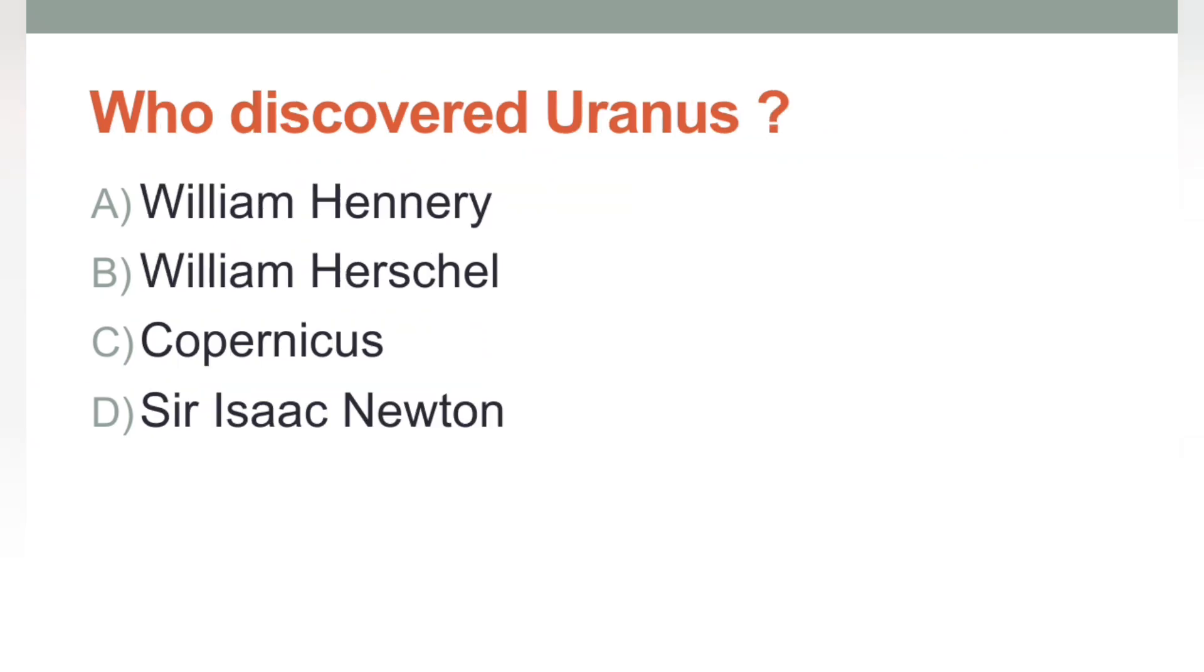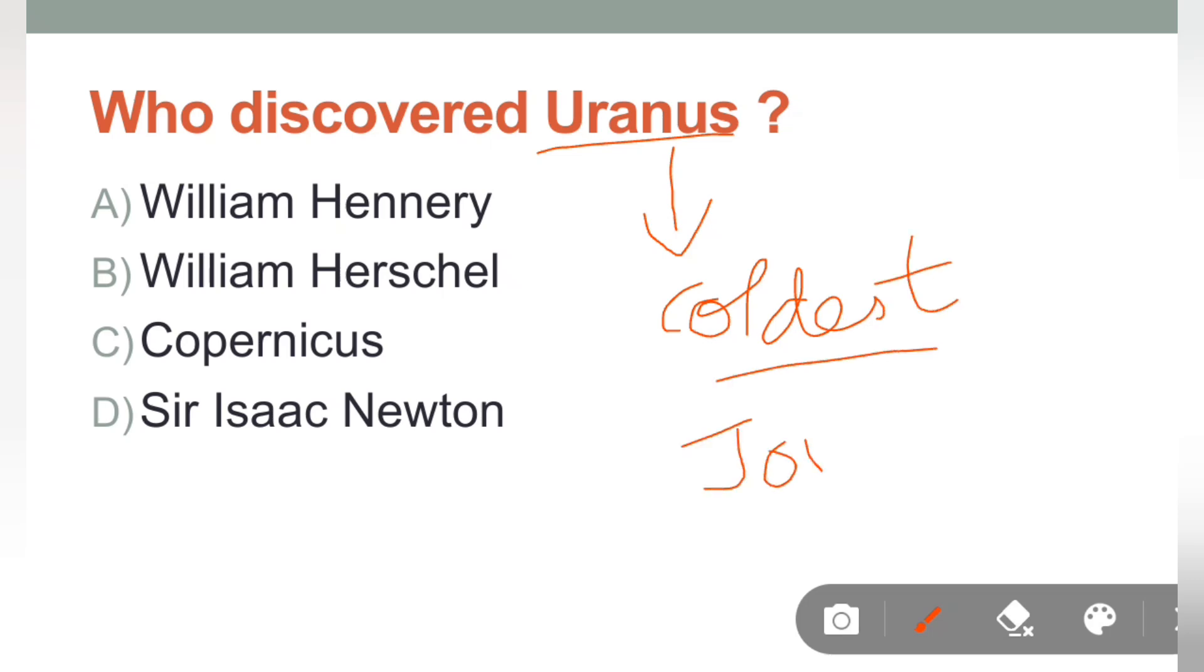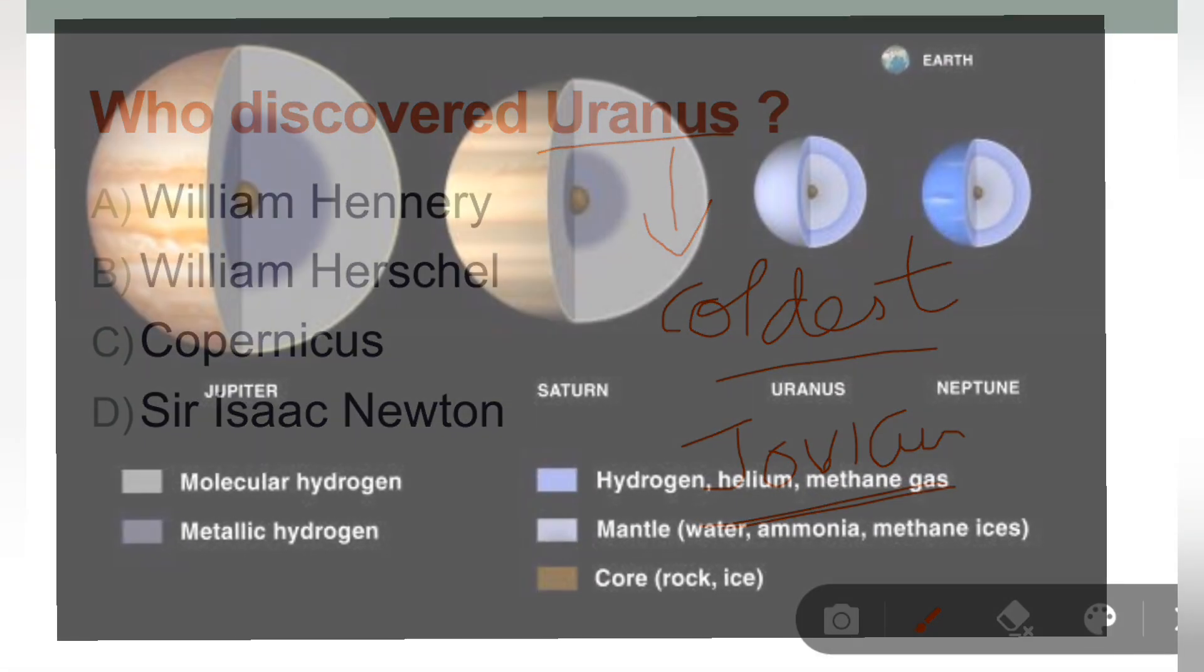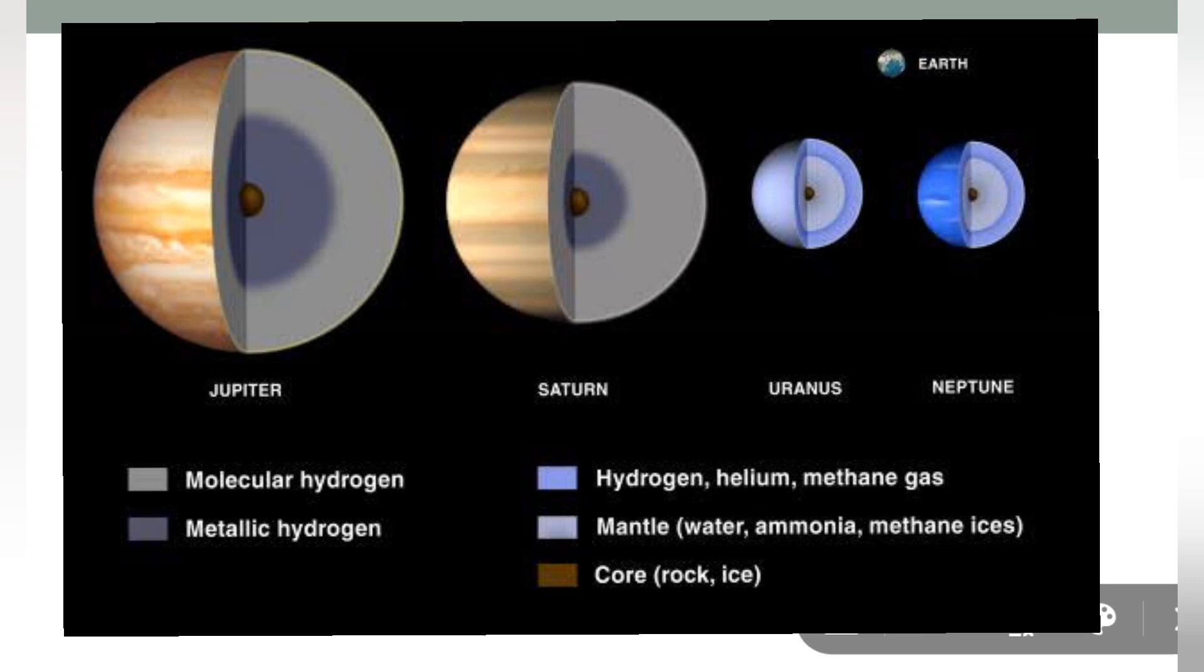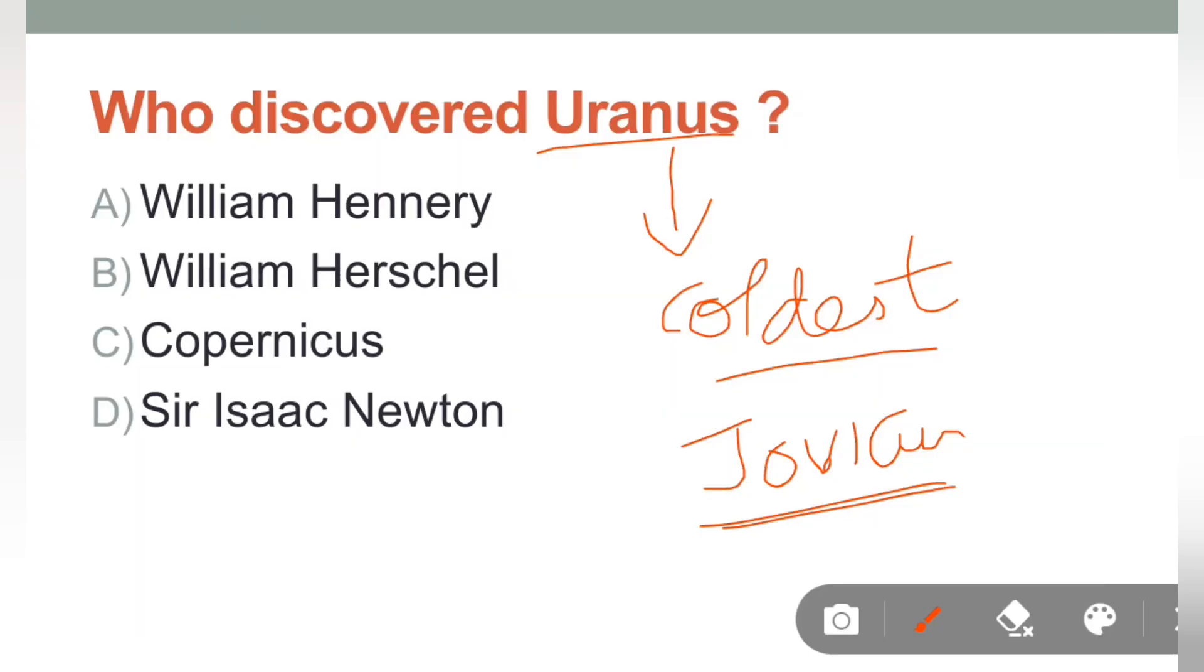Next question is: Who discovered Uranus? Uranus is the coldest planet of our solar system. It is the coldest planet, as well as Uranus is also a Jovian planet. Now, Jovian planets are the planets that are bigger in size. For example, Jupiter, Neptune, Saturn, Uranus. These are all Jovian planets, they are bigger in size and mostly gaseous in nature.